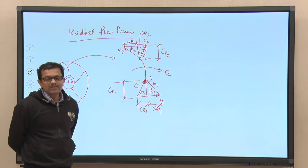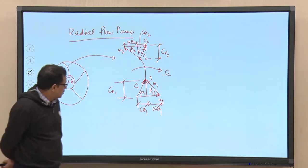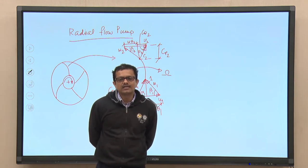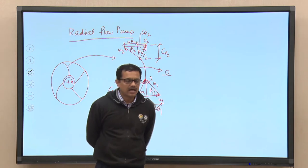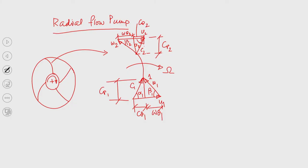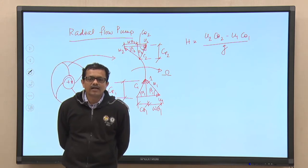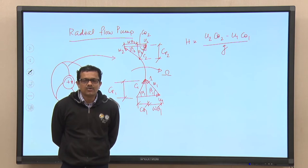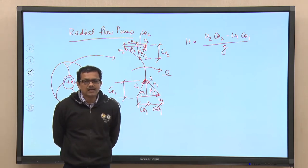The impeller is rotating at angular speed omega. The most important expression for the pump is the head developed, given by Euler's equation: H = (u2·c_theta2 − u1·c_theta1) / g. This expression gives the ideal head — frictional and other losses are not accounted for.